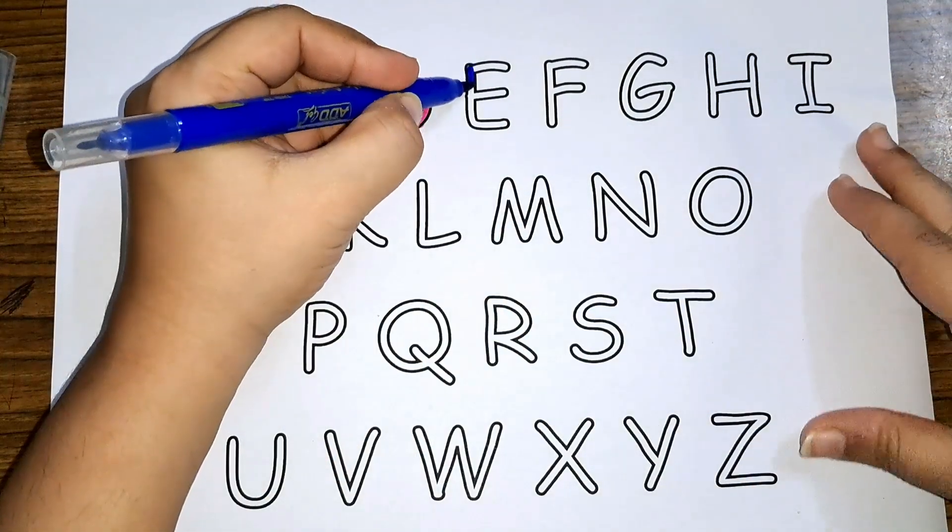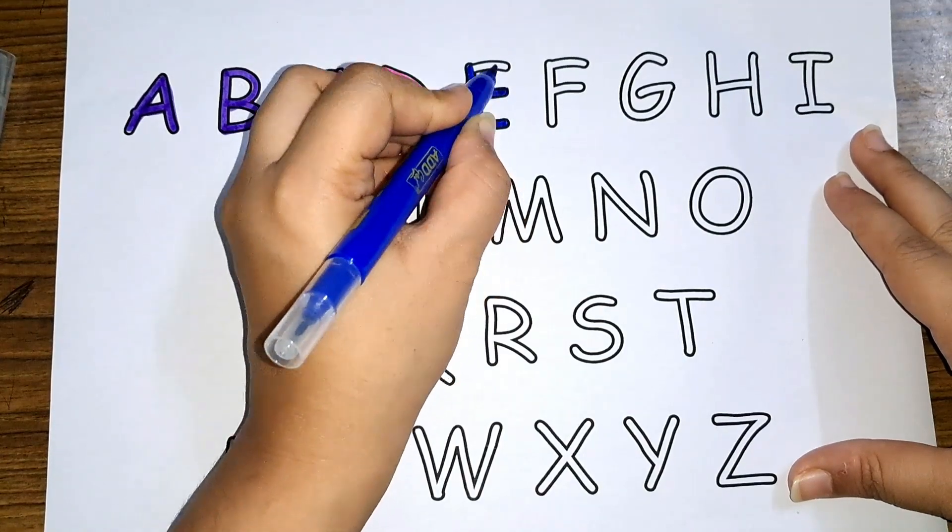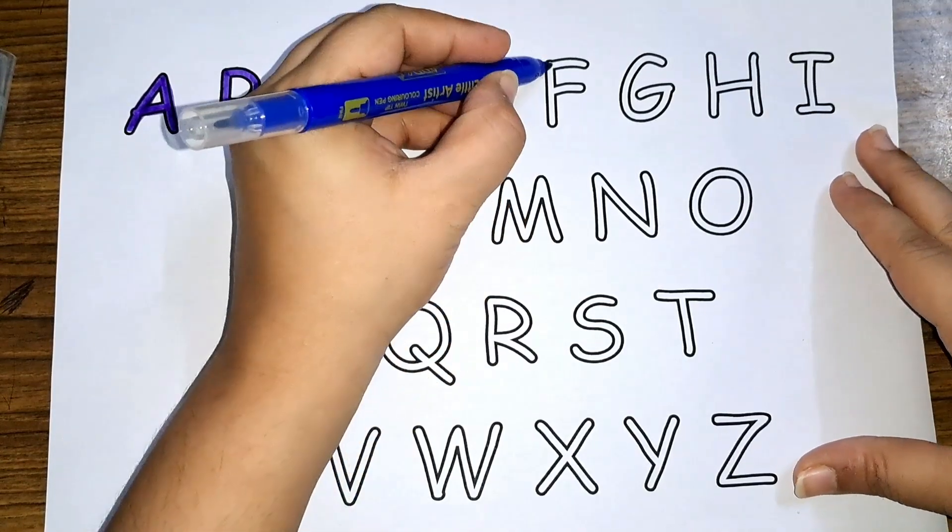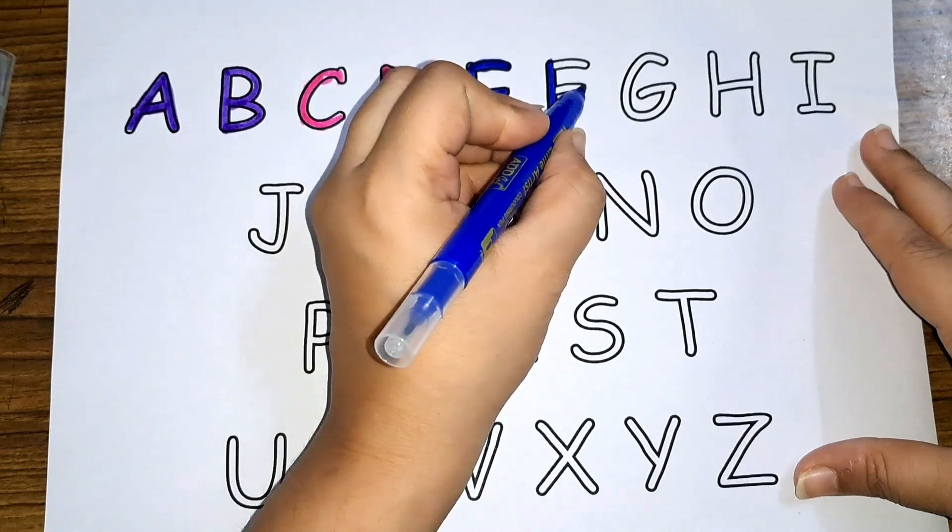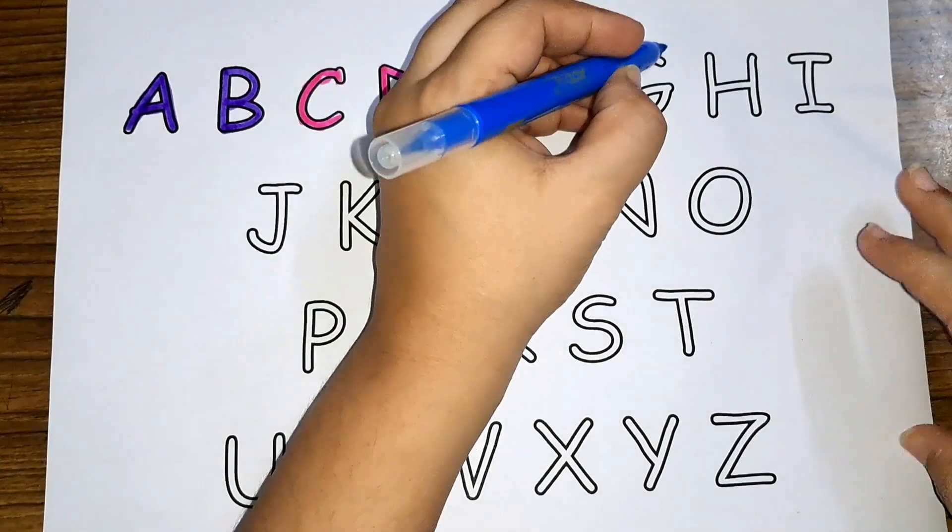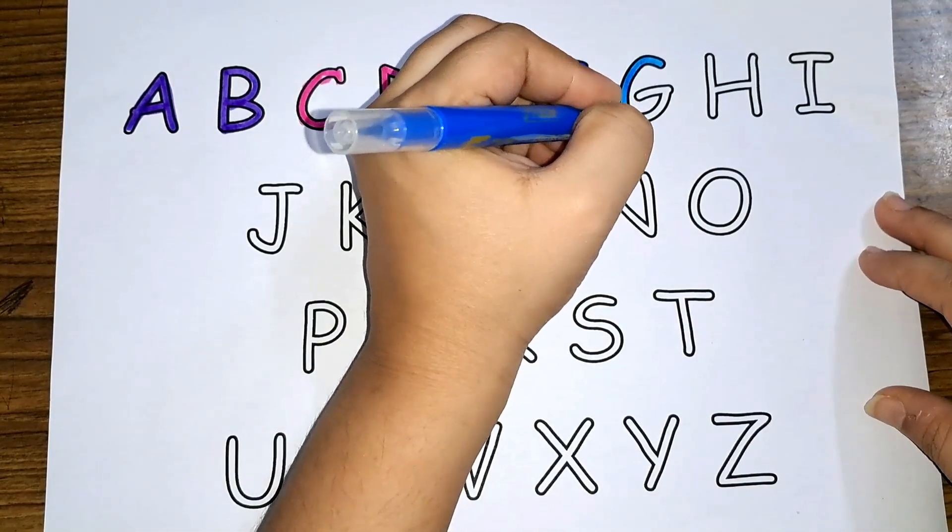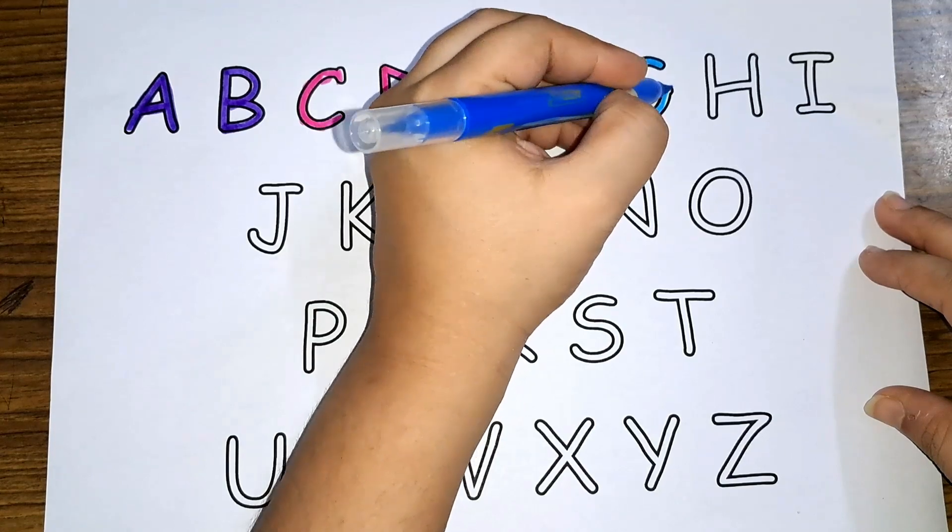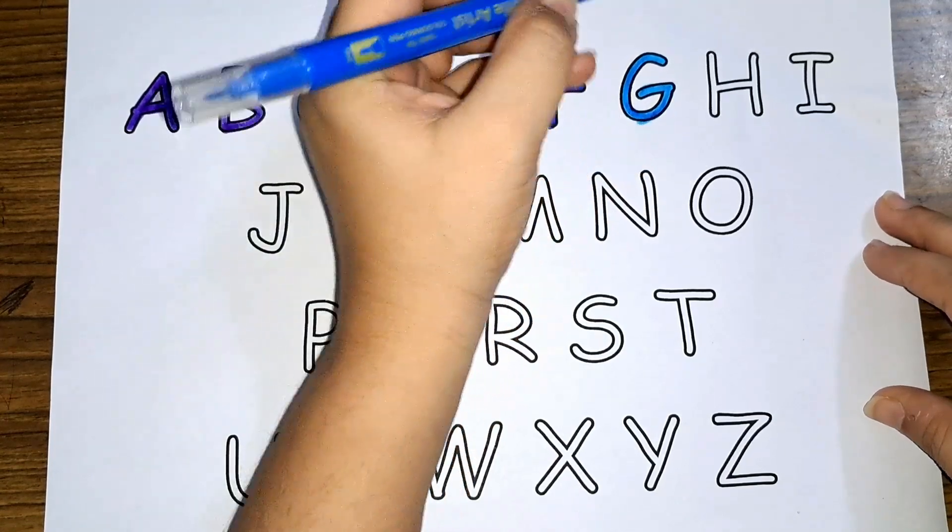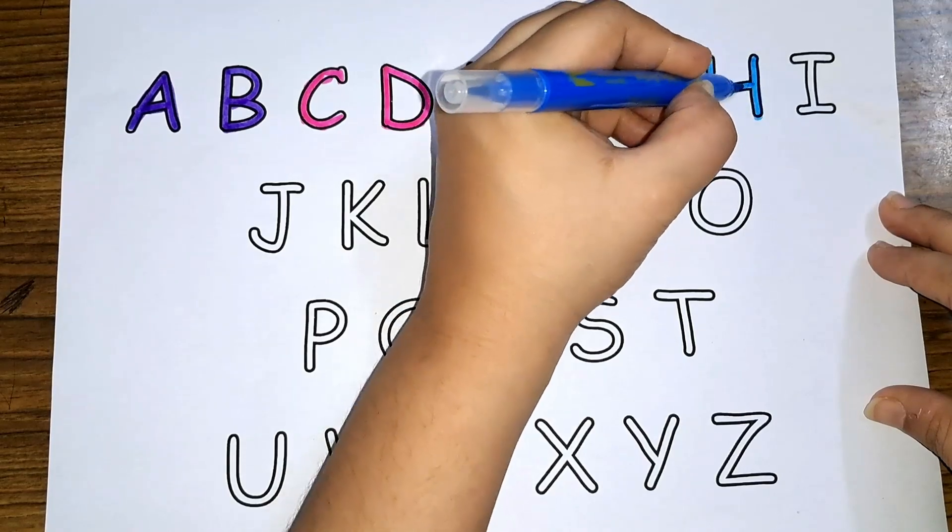E, E for engine. F, F for flamingo. G, G for gate. H, H for house.